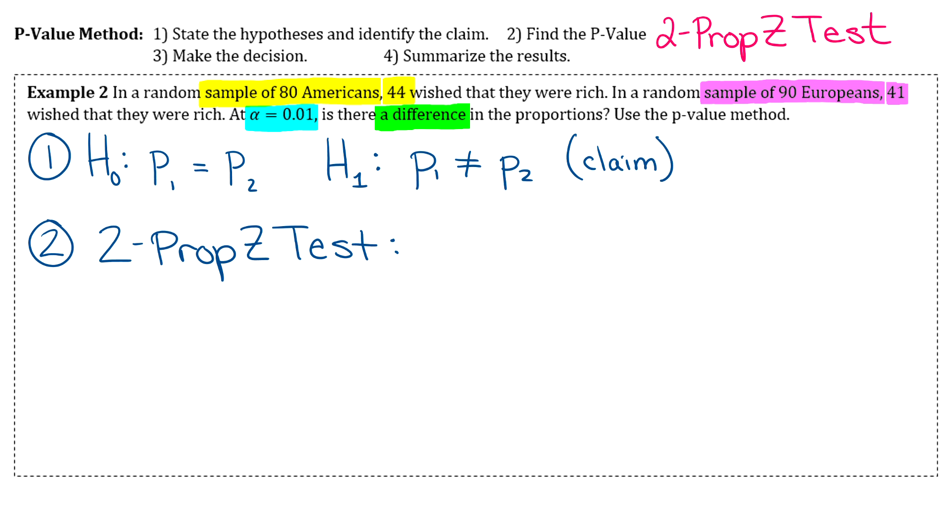x1 is going to be the number of people from the first sample who have the characteristic that they wish they were rich, so that's 44. n1 is the total number of people in the first sample, so that's 80.